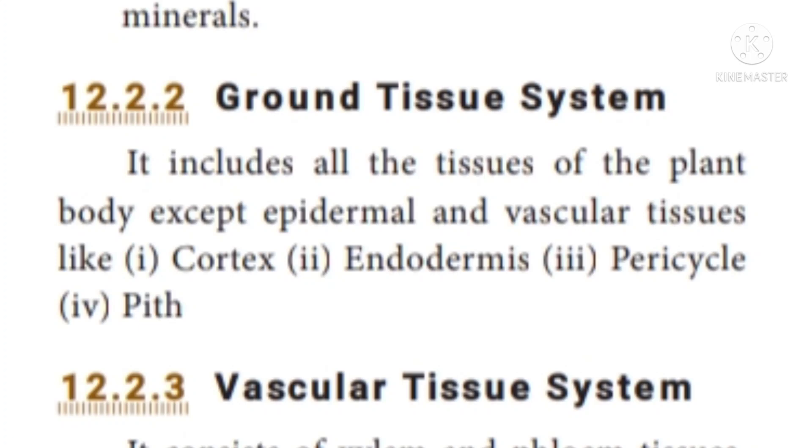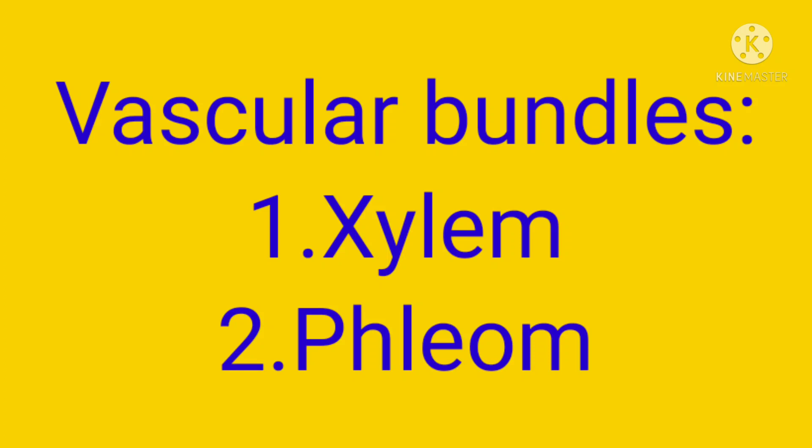Next, we will talk about the vascular tissue system. The vascular tissue system is organized as vascular bundles. It has two main components: xylem and phloem. Xylem helps in the transportation of water and mineral substances to all parts of the plant body. Phloem helps in the transportation of food materials to all parts of the body.